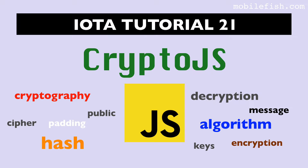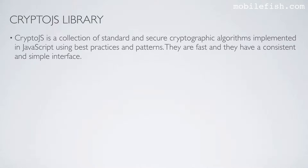In this video I will explain what the JavaScript Crypto.js library is and what the origin is of this library. But I will not explain how to use it. Crypto.js is a collection of standard and secure cryptographic algorithms implemented in JavaScript using best practices and patterns.